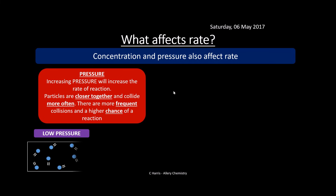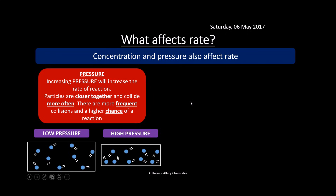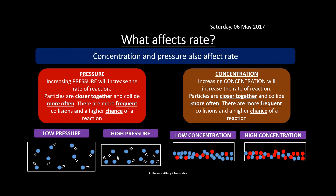Concentration and pressure also affect rate. If we increase the pressure, particles are moved closer together, giving a higher chance of more frequent collisions and a higher chance of reaction. In the diagrams, at low pressure particles are more spaced out, but when we decrease the volume of the box the particles are much closer together — higher chance of collision. Concentration works on the same principle: a higher concentration means more particles in the same volume of space, they're closer together, more likely to collide more often, and there's a greater chance of reaction.